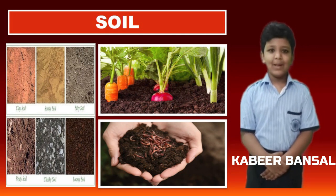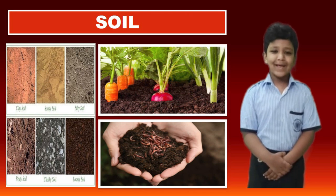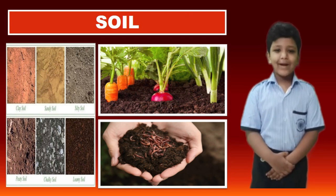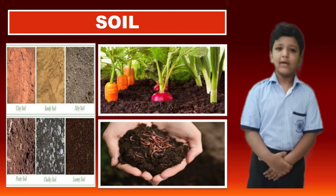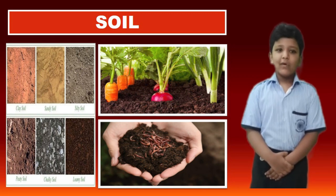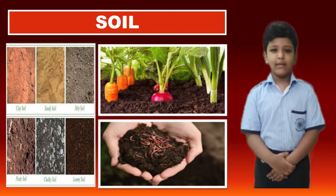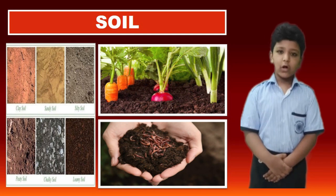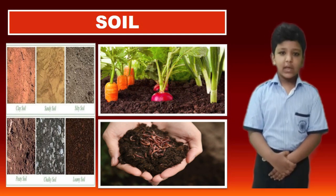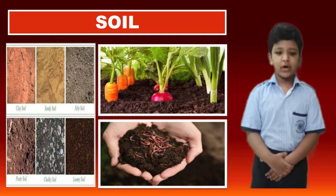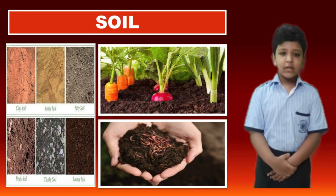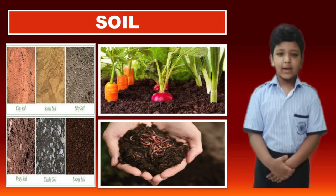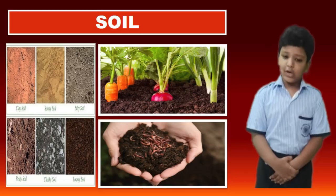Soil is our life support system. There are various kinds of soil: clay, silt, peat and loam. Clay soil is used to make bricks and pots. It holds water and nutrients. Soil also purifies water, which is used for drinking and farming. We can see termites and ants that live inside the soil.